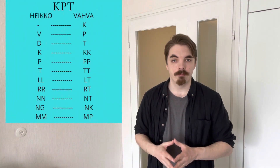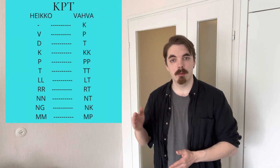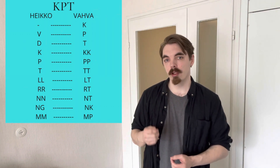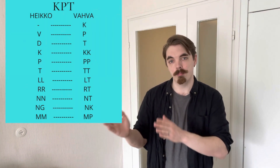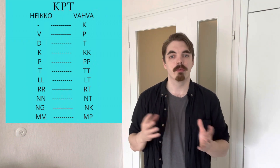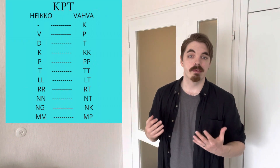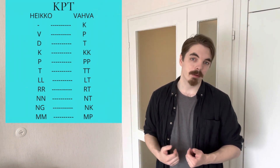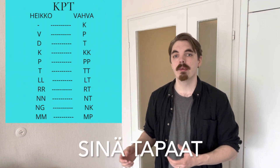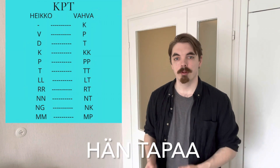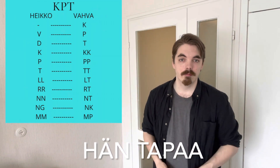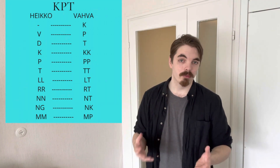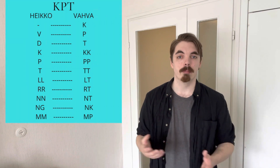In verb type 4 we have a vowel plus TA at the end, and we take the T out, leaving us with two vowels. We look at the consonants that come right before that and change them weak to strong, just like in type 3. So in TAVATA, the weak V becomes a strong P — TAVATA, meaning 'to meet', becomes MINÄ TAPAAN, SINÄ TAPAAT, HAN TAPAA. There are exceptions, such as AVATA where we don't change the V, but in most verbs we apply consonant gradation when applicable.